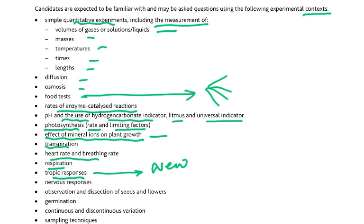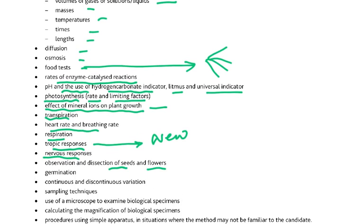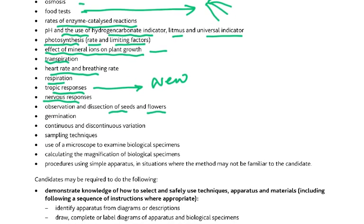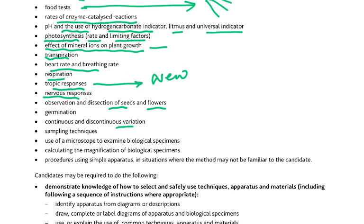Then nervous responses, observation and dissection of seeds and flowers, germination, continuous and discontinuous variation, sampling techniques, use of a microscope to examine biological specimens, calculate the magnification of biological specimens, and use various methods and procedures using simple apparatus in situations where the method may not be familiar to the candidate.